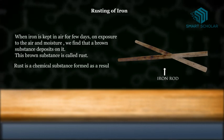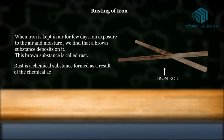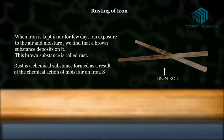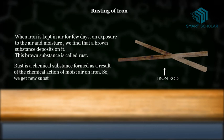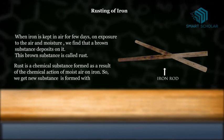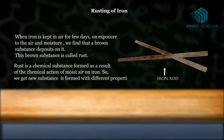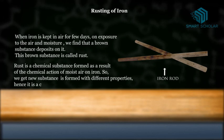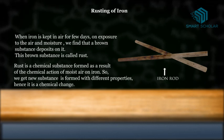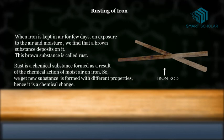Rust is a chemical substance formed as a result of the chemical action of moist air on iron. So we get a new substance which is formed with different properties. Hence, it is a chemical change.